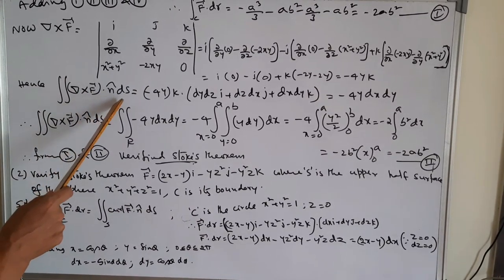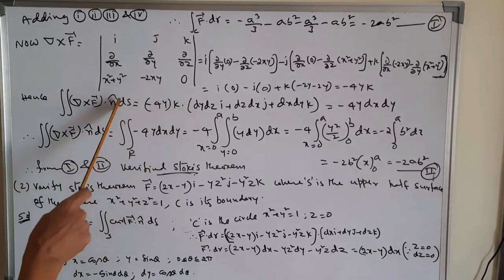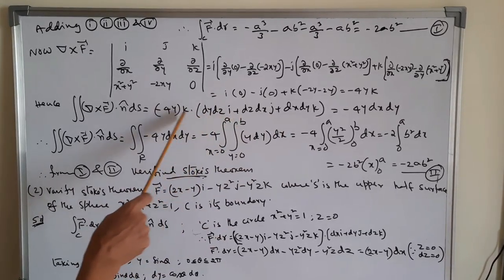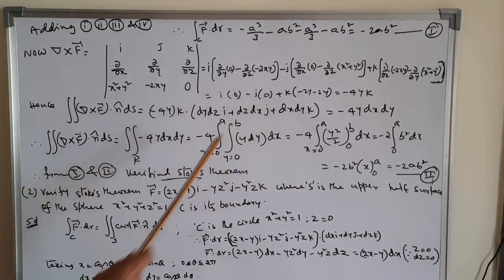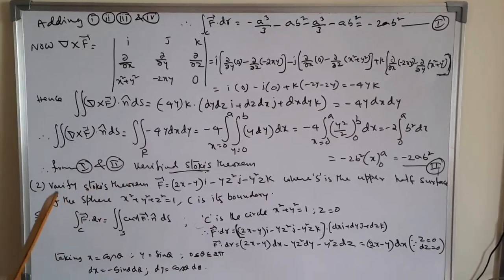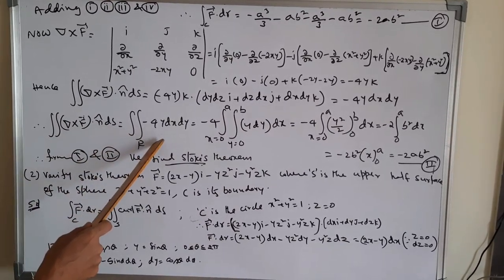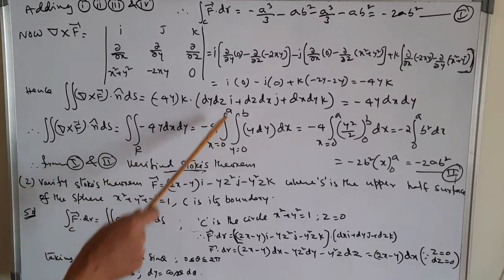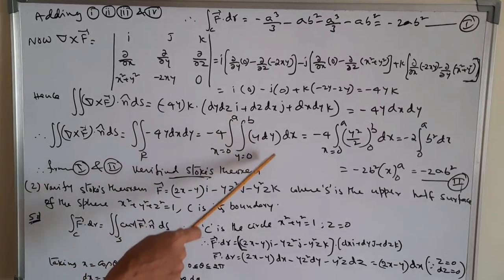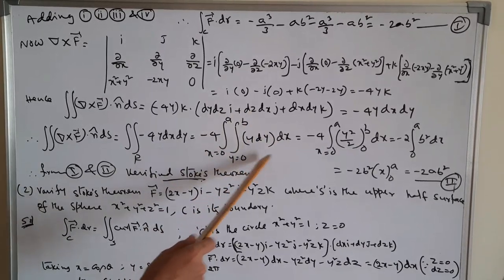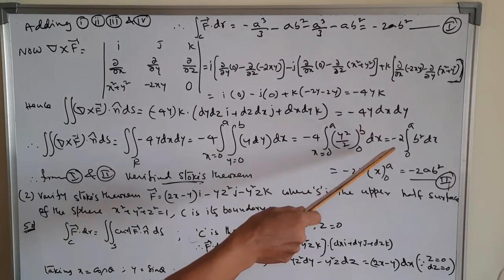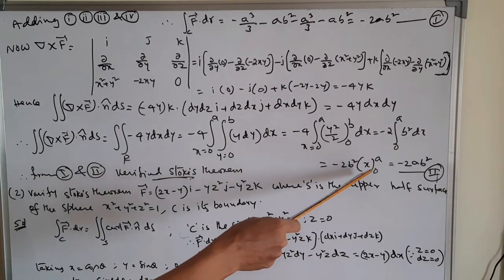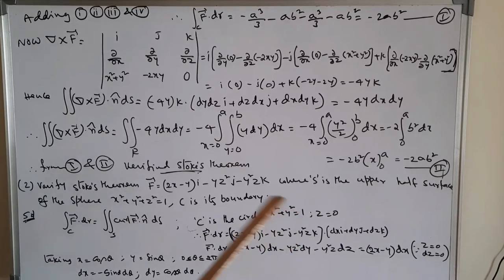Now compute the double integral of (del × F̄) · n̂ ds = double integral of (−4y k) · (dy dz i + dz dx j + dx dy k). The dot product gives only the k·k = 1 term, so we get −4y dx dy. Taking −4 outside: −4 · integral from x=0 to a · integral from y=0 to b of y dy dx. Integrating y dy gives y²/2 with limits 0 to b = b²/2. Then integrating gives −2ab². Consider this as equation (2).